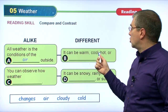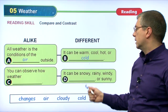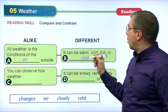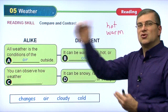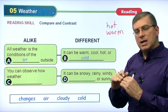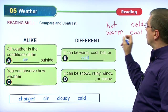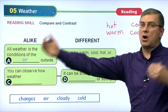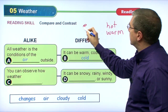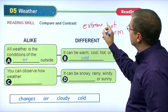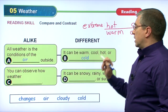How is the weather different? It can be warm, cool, hot, or — filling in the blank from changes, air, cloudy, cold — cold. Warm, cool, hot, or cold are our temperature words. Hot and cold are extremes — extreme weather. Warm and cool are kind of in the middle. If we talk about extreme weather, it's very hot or very cold. So these are the temperature extremes. That's how weather can be different in terms of temperature.